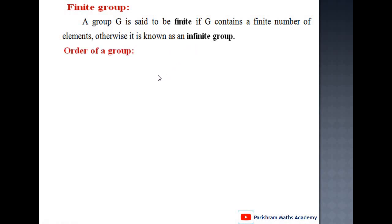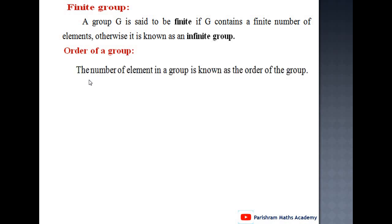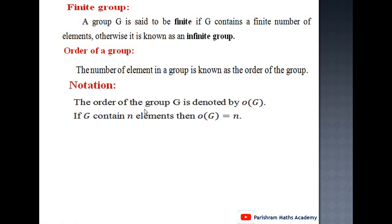Order of an element; order of a group. The number of elements in a group is known as the order of the group. If G contains 4 elements then order of G is 4. If G contains 5 elements then order of G is 5. The order of the group G is denoted by O(G). If G contains N elements then order of G equals N.